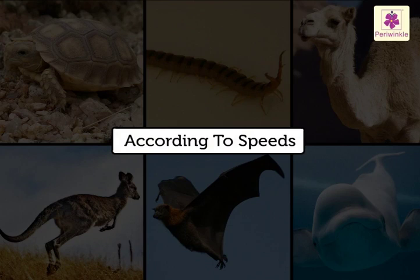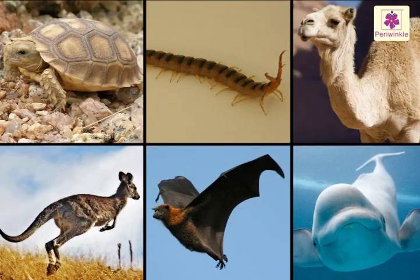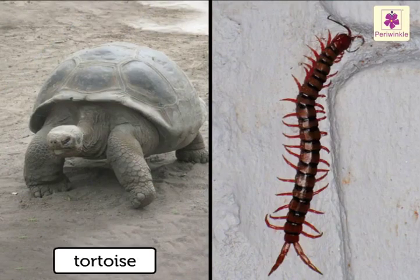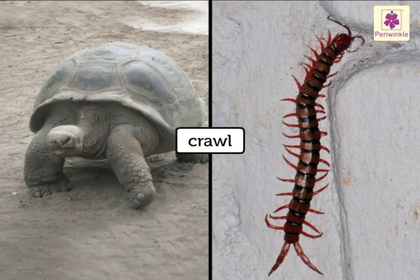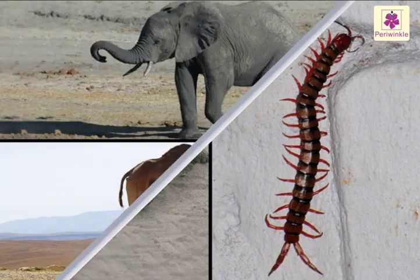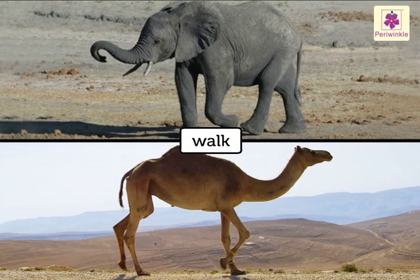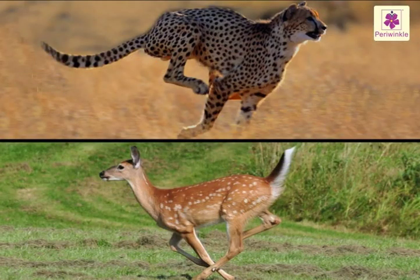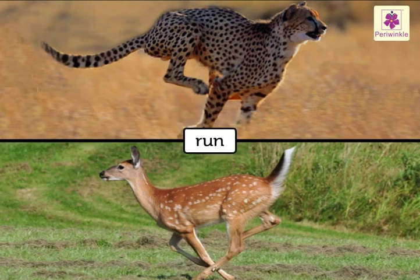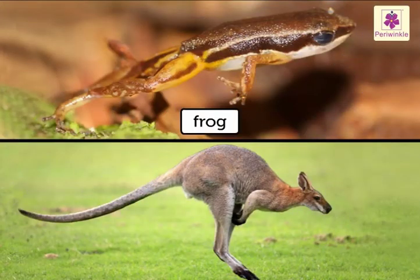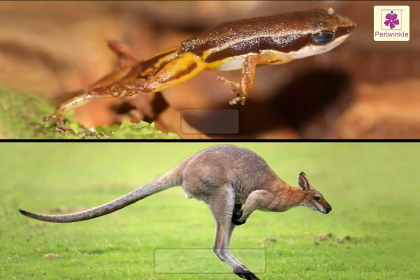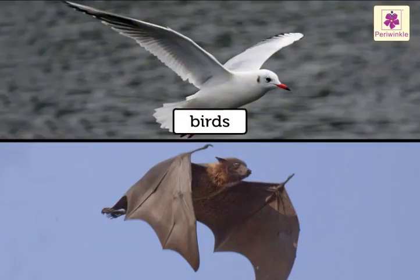According to speeds, all animals move at different speeds. Tortoise and centipede crawl. Animals like elephant and camel walk. Animals like leopard and deer run. Frogs and kangaroos hop. Birds and bats fly.